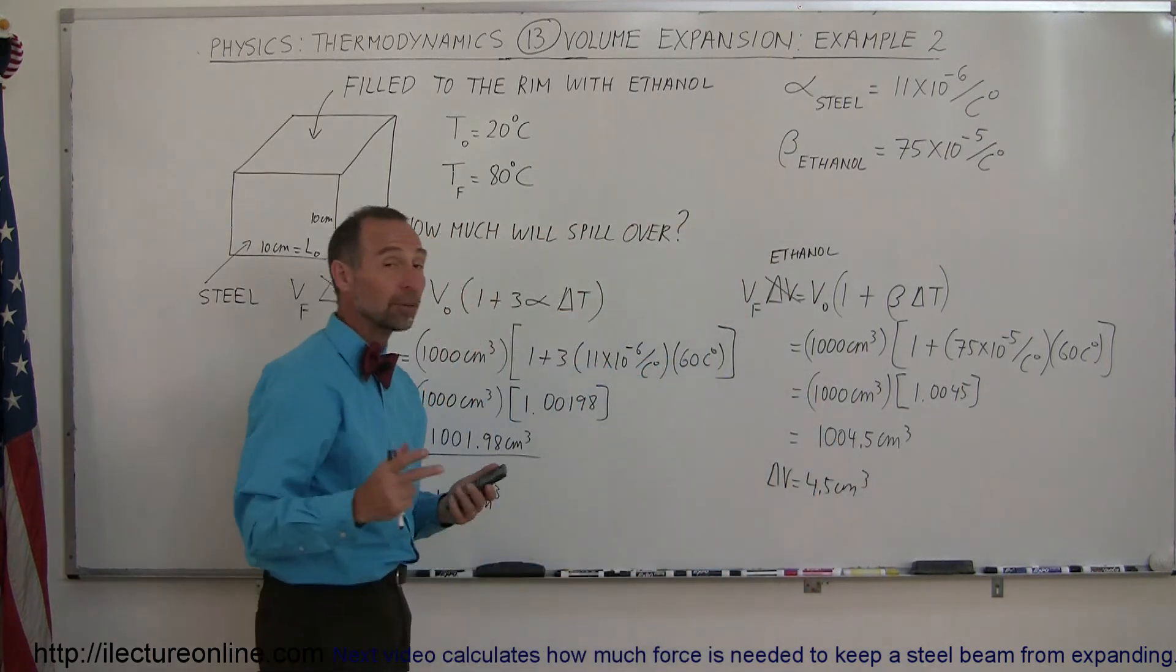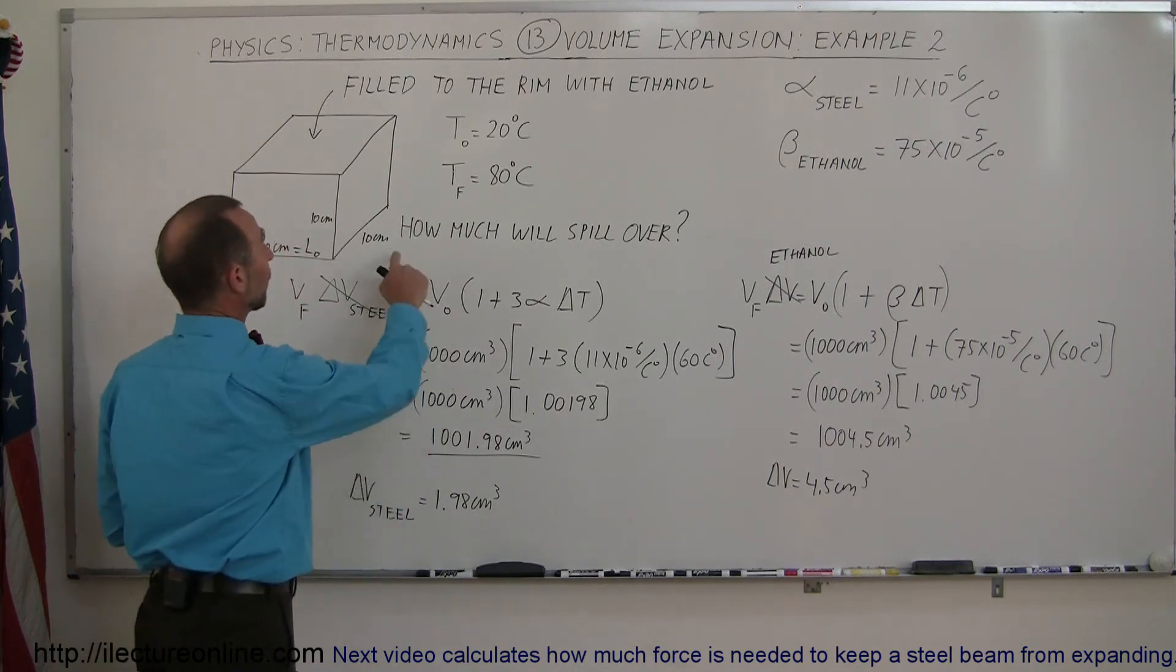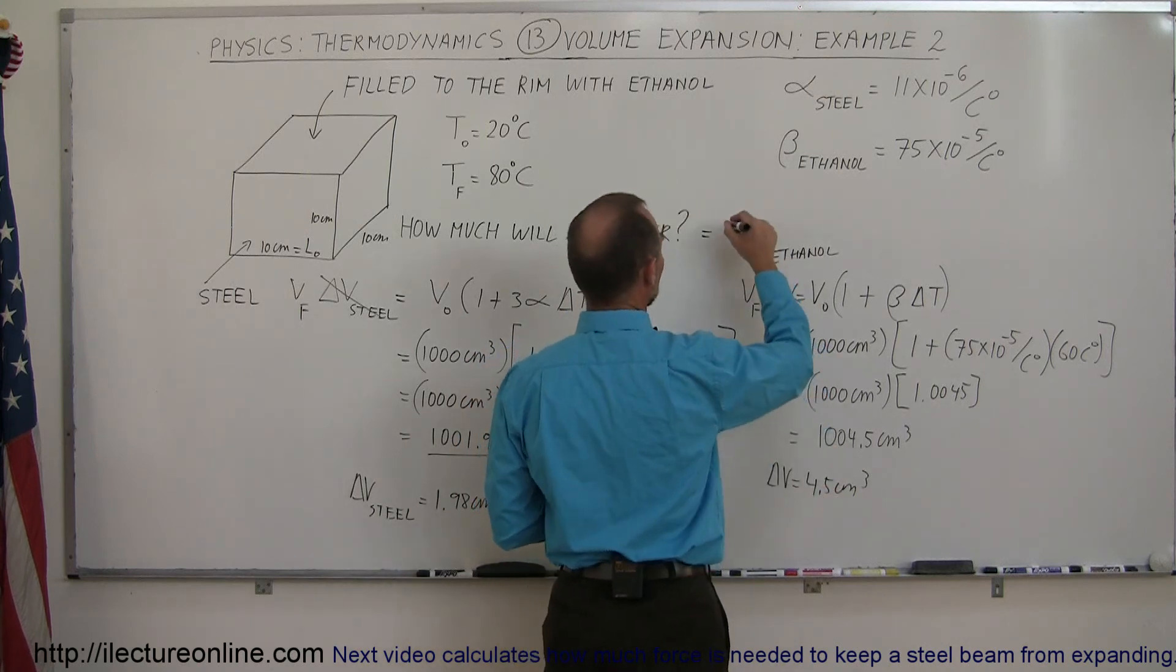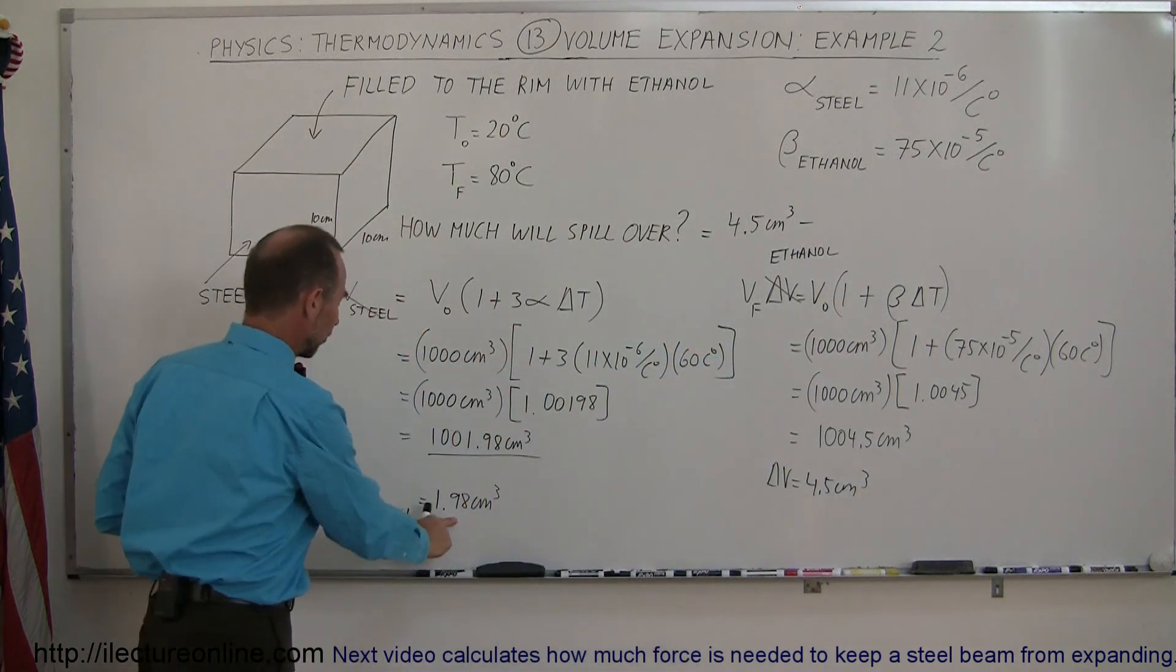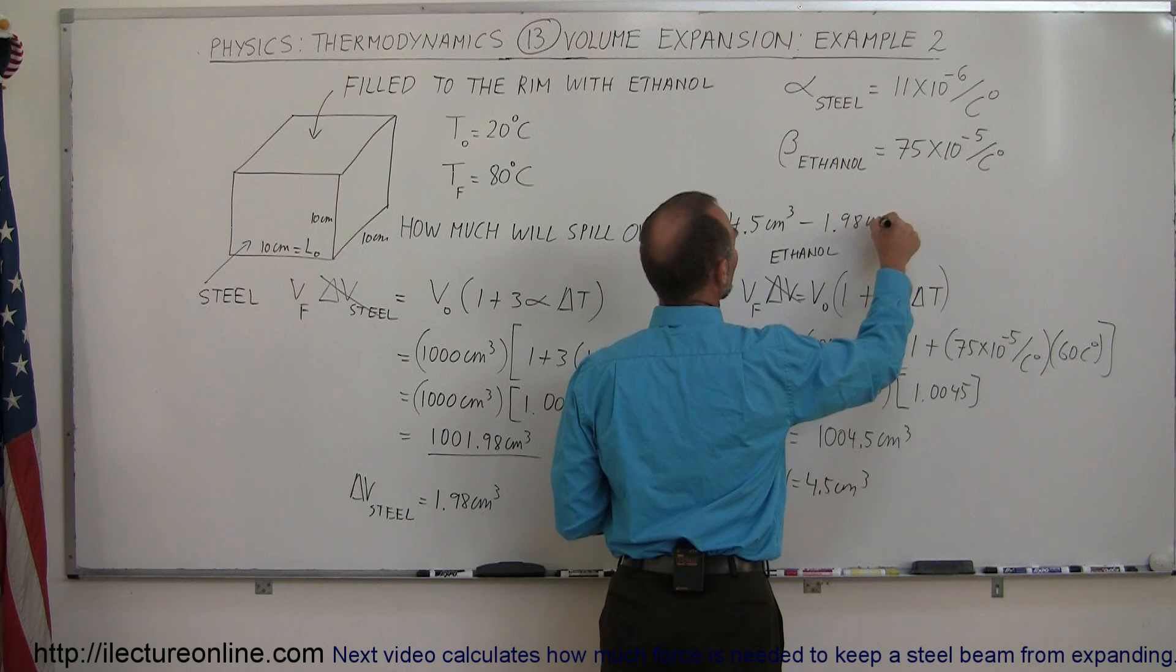So notice that the ethanol expanded more than the steel, and that extra will then spill over. So how much will spill over? Well, this will be equal to the change in the volume of the ethanol, which is 4.5 cubic centimeters, minus the change in the volume of the steel, which is 1.98 centimeters cubed.